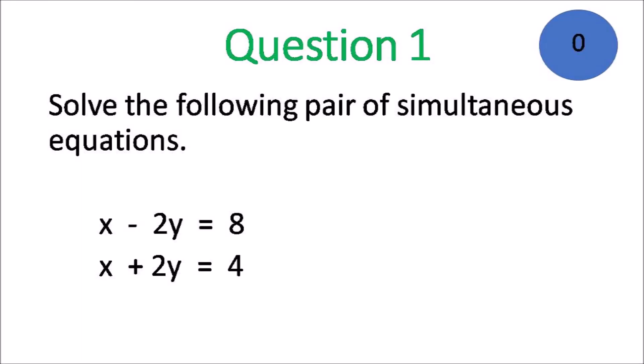Question 1. Solve the following pair of simultaneous equations: x minus 2y is equal to 8, and x plus 2y is equal to 4.